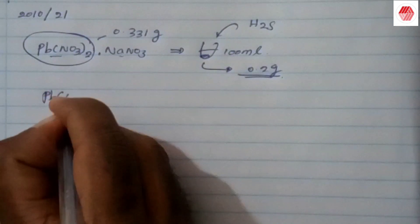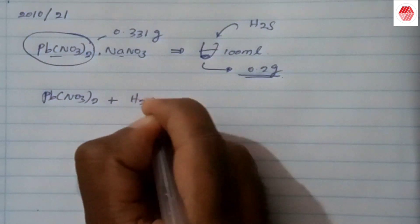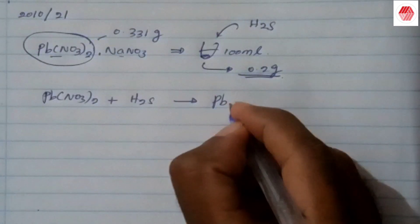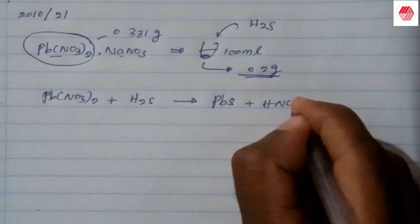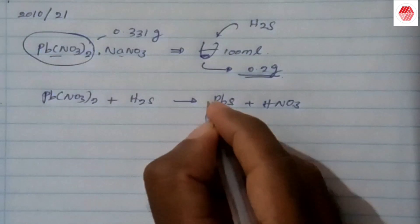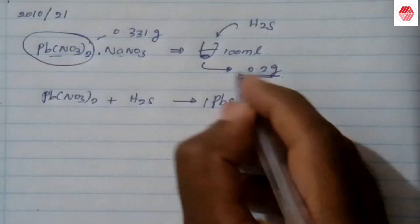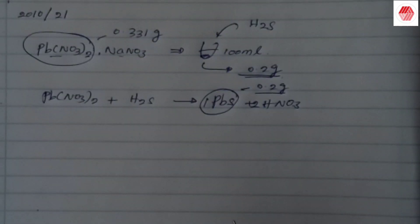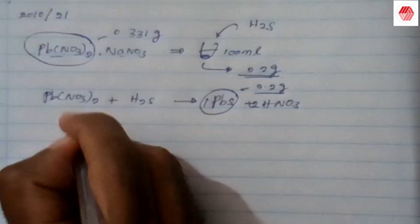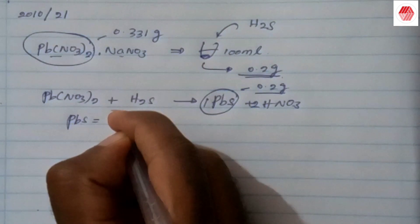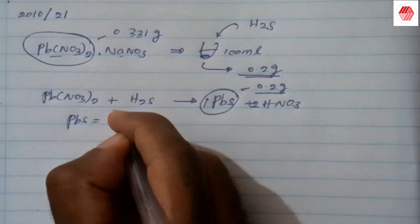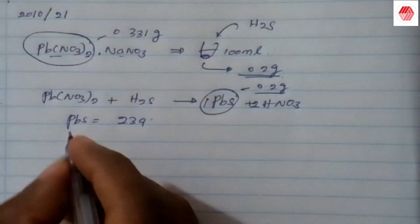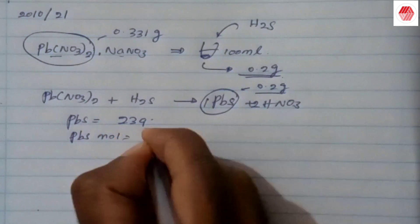The reaction is: Pb(NO₃)₂ + H₂S → PbS + HNO₃ (twice). If you go to S2S, you can see PbS is the same.